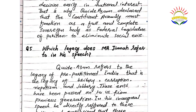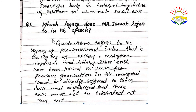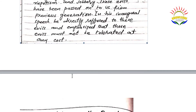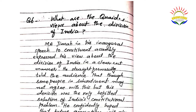Question number five: which legacy does M.A. Jinnah refer to in his speech? Quaid-e-Azam refers to the legacy of pre-partition India — that is, the legacy of bribery, corruption, nepotism, and jobbery. These evils have been passed on to us from the previous generation. In his inaugural speech, he directly referred to these evils and emphasized that they must not be tolerated at any cost.